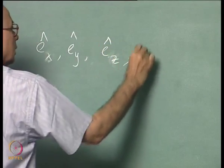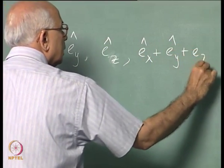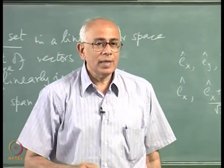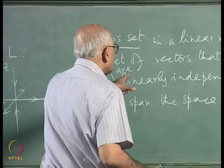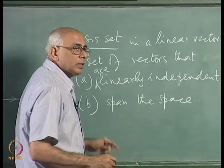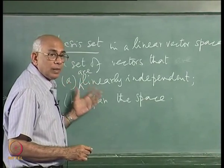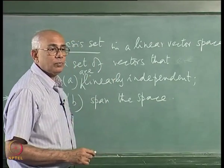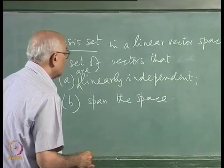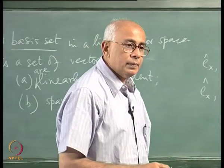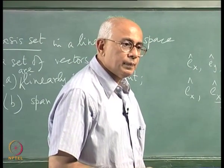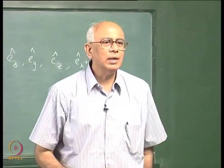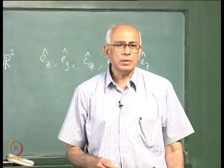A set like e_x, e_y, e_z, and (e_x + e_y + e_z)/√3 spans the space but the vectors are not linearly independent. So these two concepts are genuinely different: you may have vectors that are linearly independent but do not span the space, or vectors that span the space but are not linearly independent. Since this is not primarily a linear algebra course, I have not given the formal definition of a vector space, but we will define things more formally as the need arises.